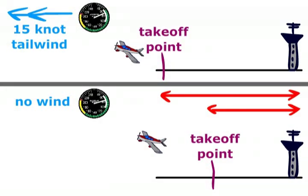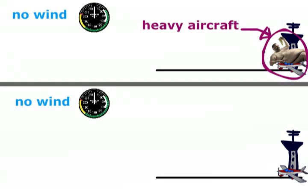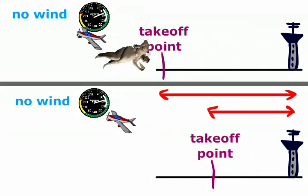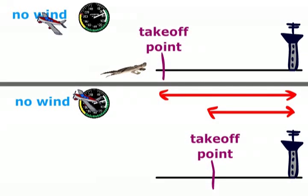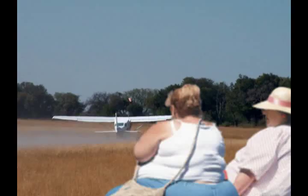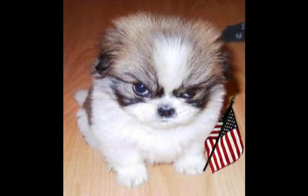Weight also affects takeoff distance. The heavier your aircraft, the longer it will take to accelerate, and the longer takeoff distance you will have to travel to reach takeoff speed. You will also climb away at a shallower angle. So leave as many Americans as you can behind. Ha ha ha, my sides are splitting. That was as droll as it was original.